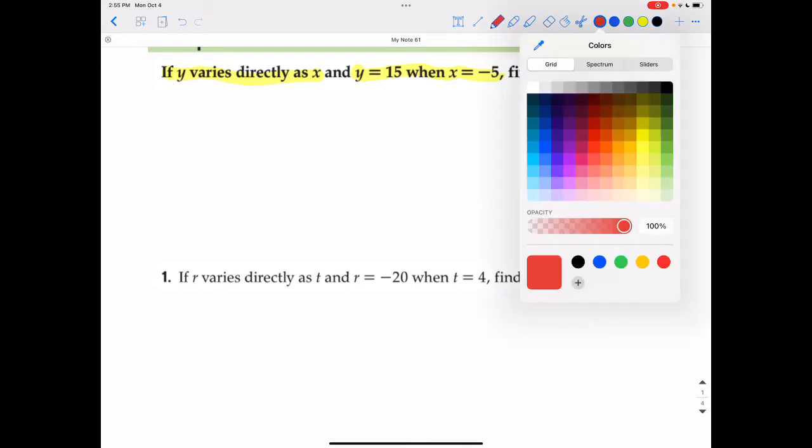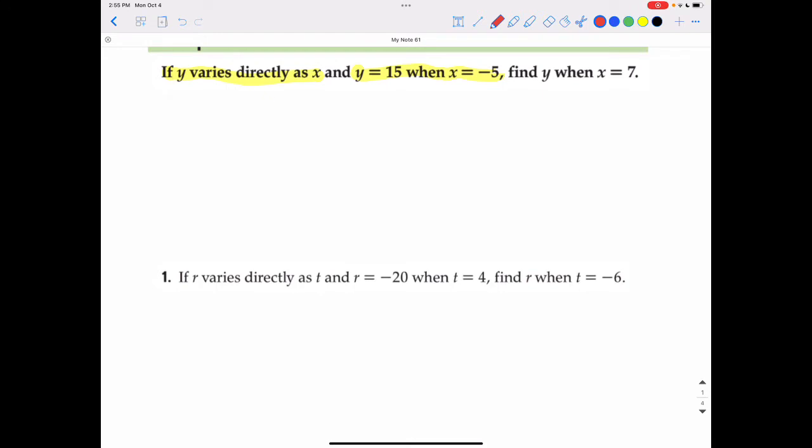We will write 15 over negative 5, and then we will set that equal to the other part where it says find Y when X equals 7. Since we put the Ys on top and the Xs on bottom, we need to make sure we remain consistent. We'll put that Y on top of the second fraction and put X on bottom, which is going to be 7.